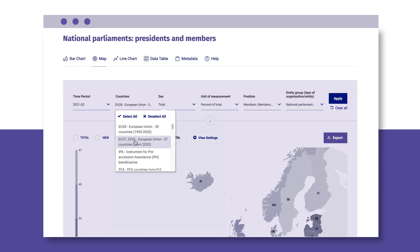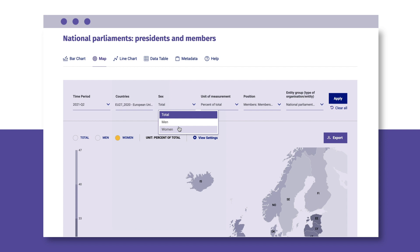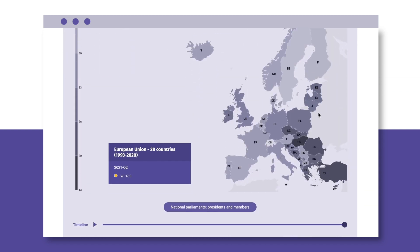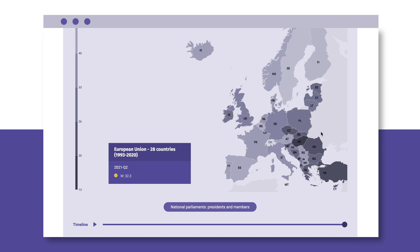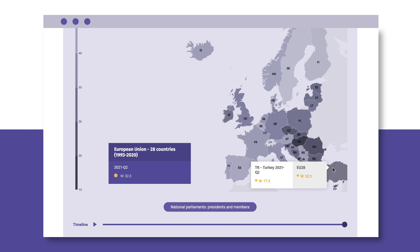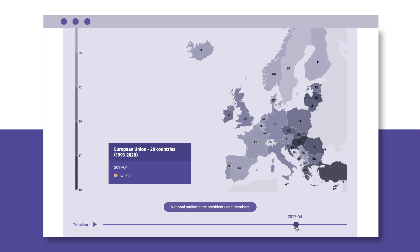Use the filter menu to select the filters you want and click Apply. In the map view, hover over any of the EU member states to reveal the comparison between women and men. Use the timeline to reveal the evolution of gender balance in national parliaments.